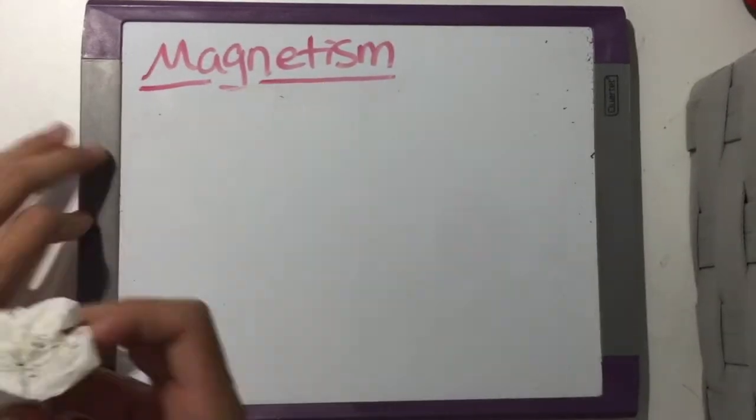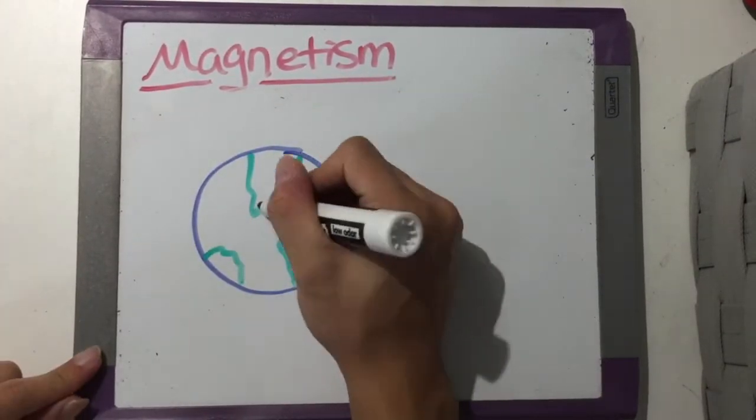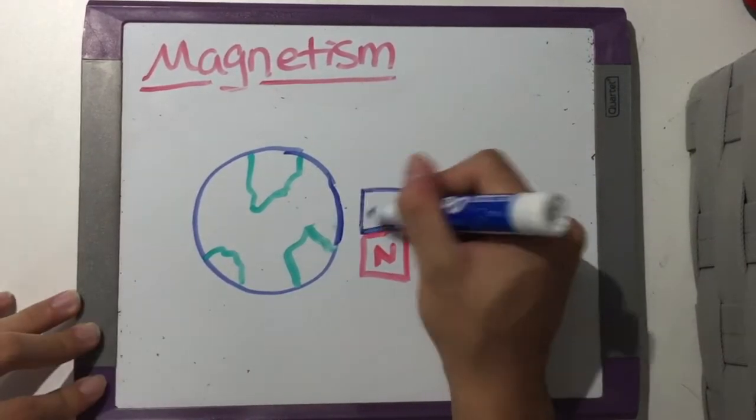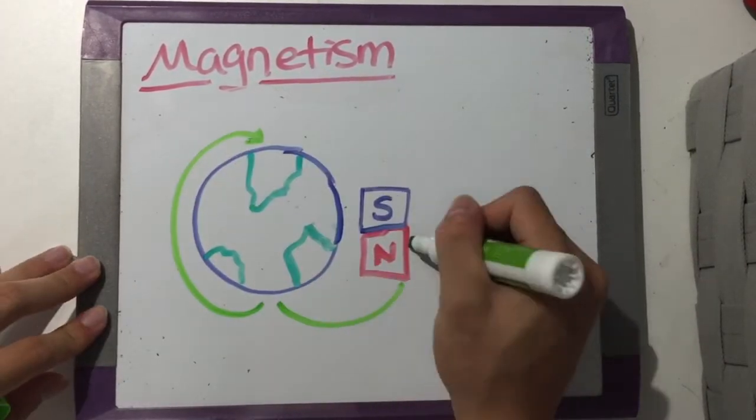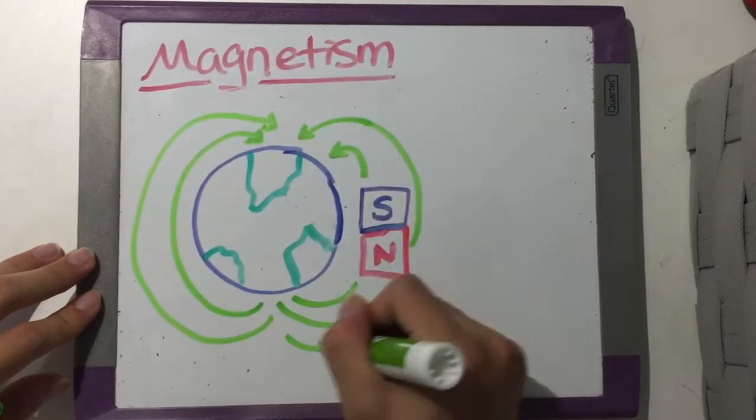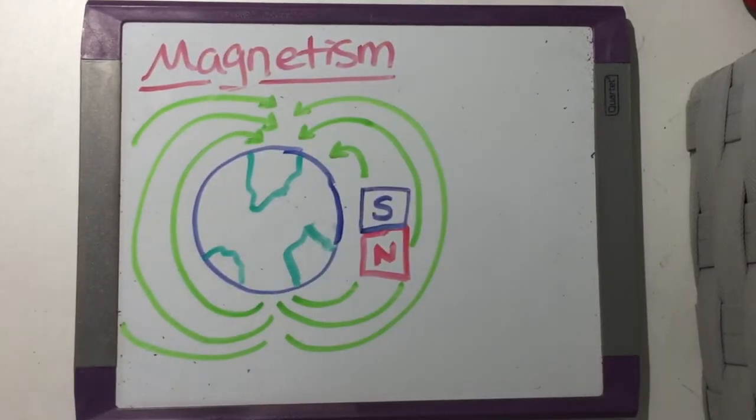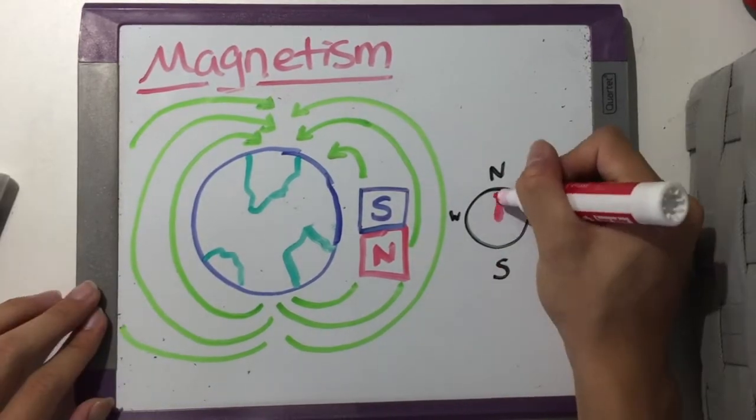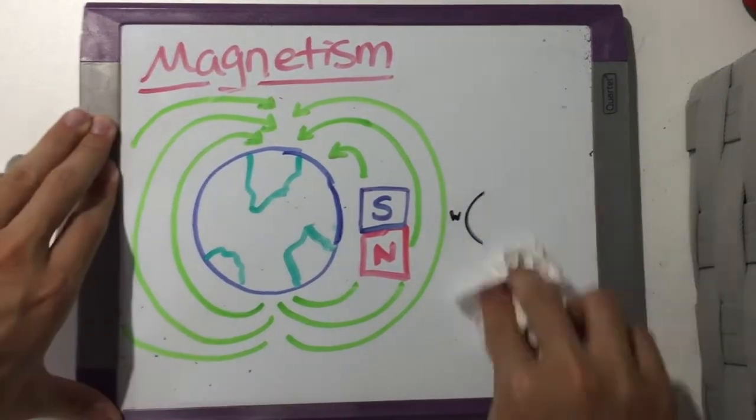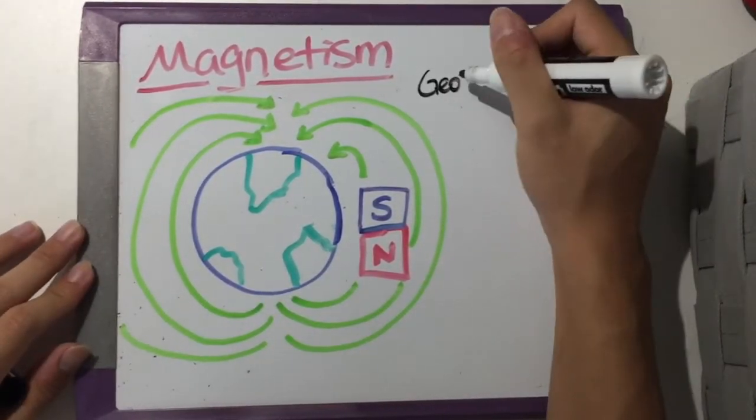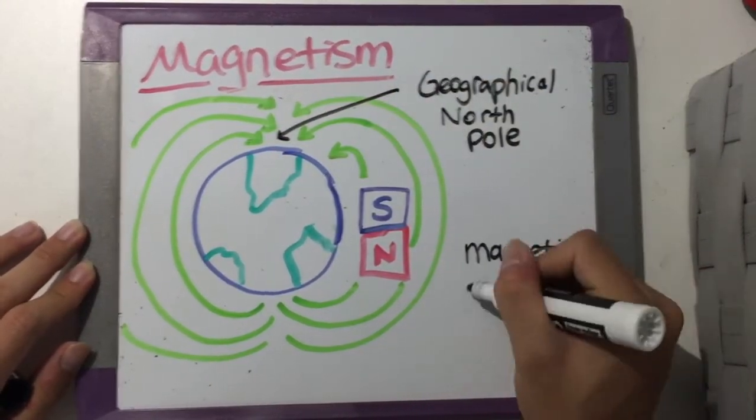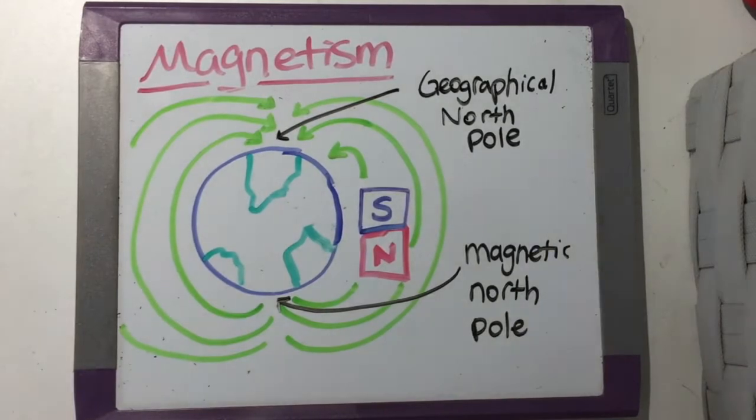For example, the Earth is actually a gigantic magnet due to the liquid iron in its core oriented like this. As I draw the magnetic flux lines, which indicates its magnetic field, we can see the reason why our compasses will always point up and towards the northern hemisphere. Therefore, the geographical location on Earth which we call the north pole is actually the south pole of Earth's gigantic magnetic field.